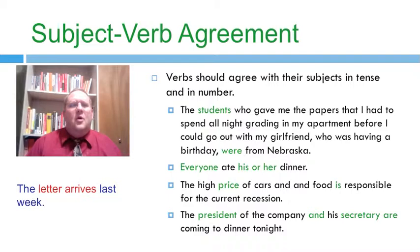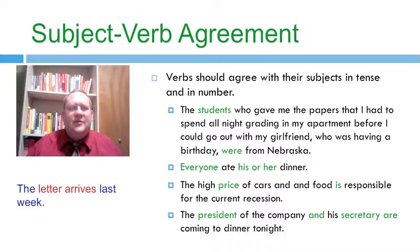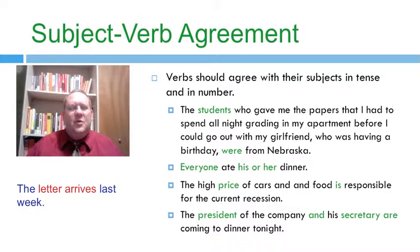Let's break each one of these errors down and talk about why it is an error and how we can correct it. First, 'the letter arrives last week' is a pretty clear violation of the rule that verbs should agree with their subjects in tense and in number. 'The letter arrives' is a present tense verb, but 'last week' is an inherently past tense situation. So it should say either 'the letter arrived last week' or perhaps 'the letter arrives today.' But to put something that clearly occurred in the past in the present tense violates the requirement for agreement.